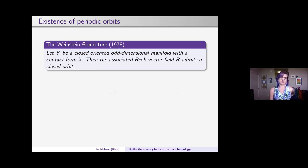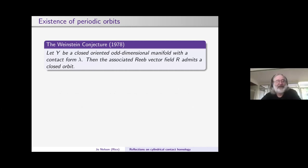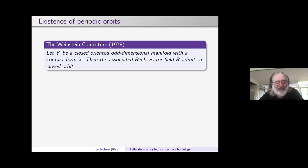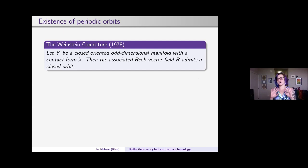It's fortunate that in the 1970s Netflix and email did not exist — otherwise we might not have this field. As a graduate student, Helmut was stuck at home with the flu with just Rabinowitz's paper. This all connects to the Weinstein conjecture, formulated in 1978. Helmut adds: Dennis Sullivan was supposed to attend a seminar but his wife told him Newton did his best work during the plague, so he went back to his desk instead.